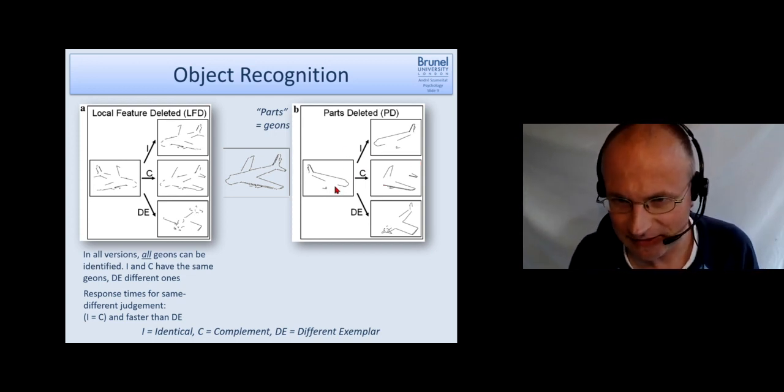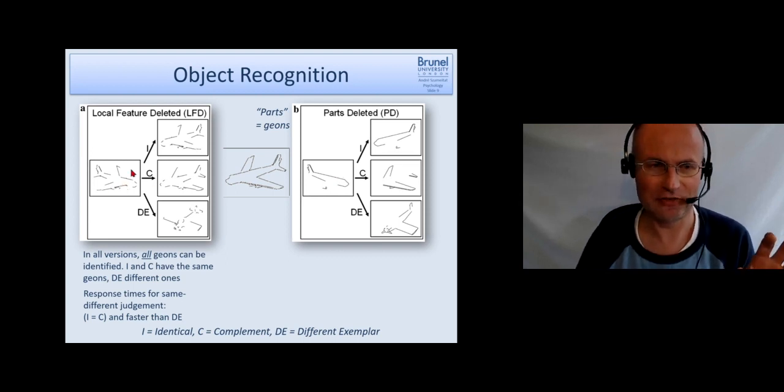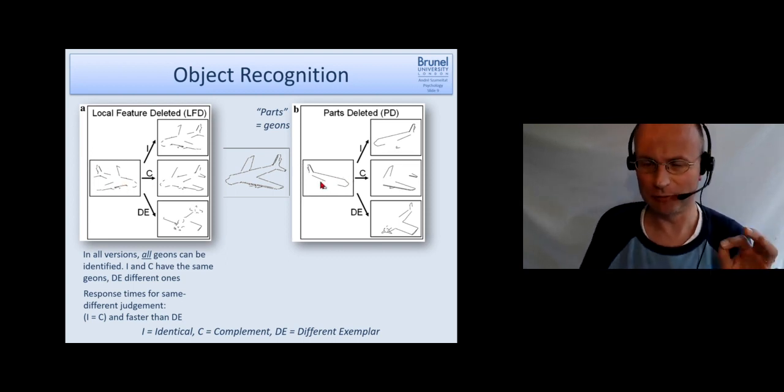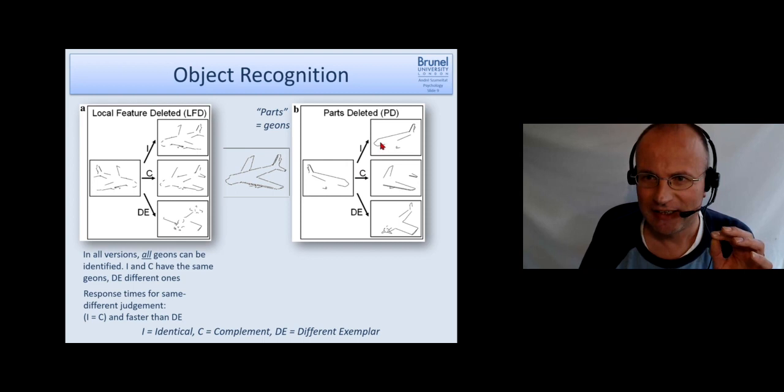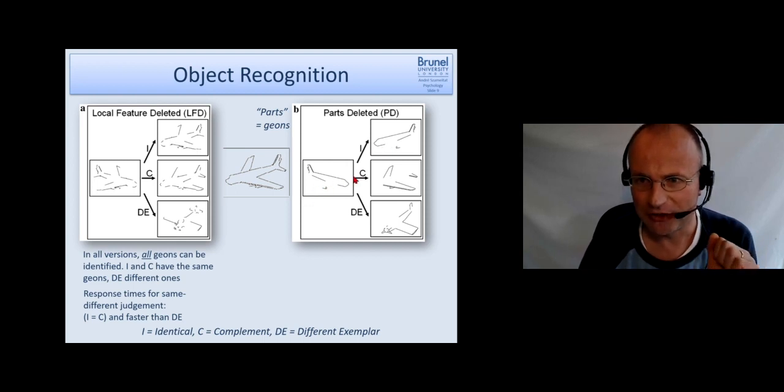So here, as I said, the same number, the same amount of lines is removed, but now complete geons are removed. So that this one has different geons to this one, while on this side they both represented the same geons. And this again is just a different exemplar, a different plane.